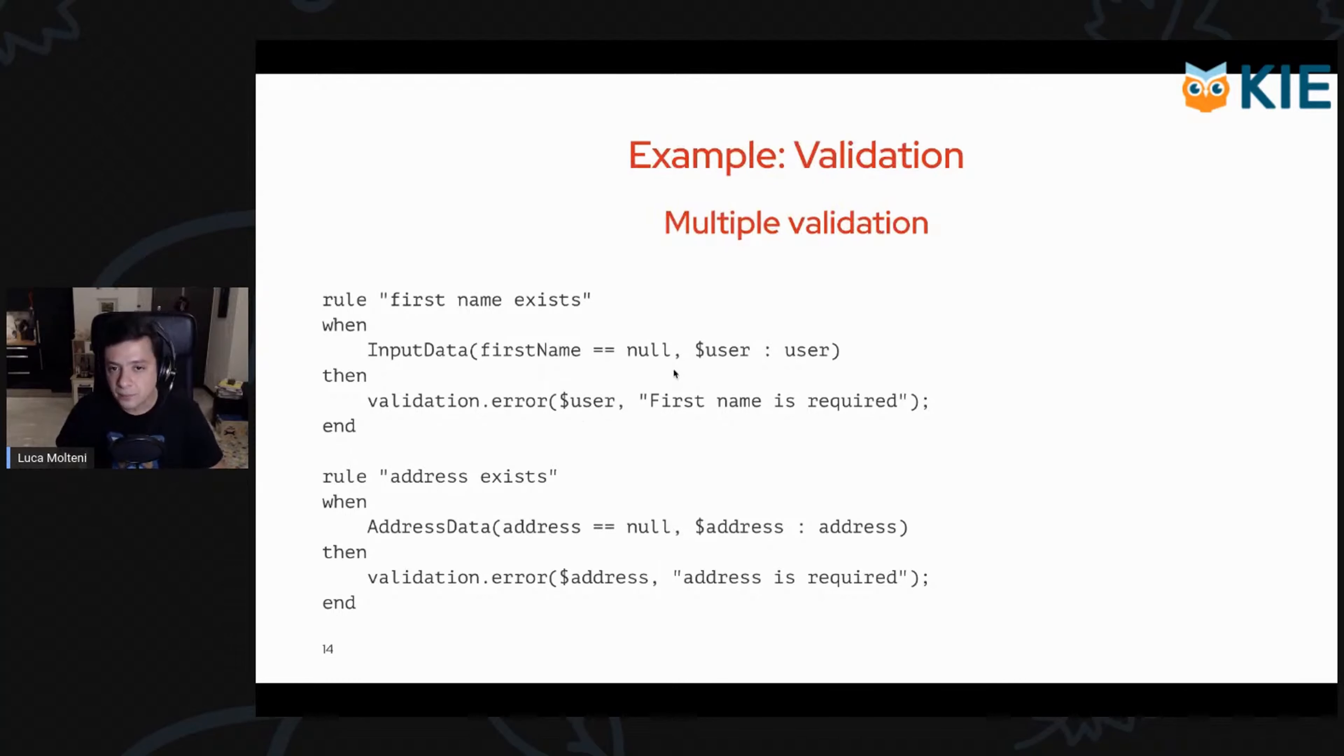But as you may notice, we aren't defining here the order in which this rule will be executed. This is very important, and it's due to the declarative nature of DRL. This is a very important feature to handle the complexity when you have a large amount of rules.